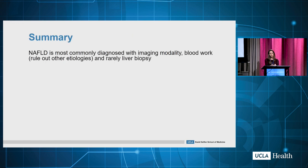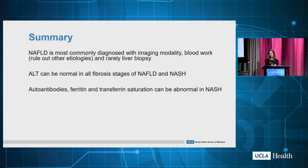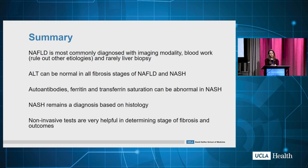In summary, NAFLD is the most commonly diagnosed liver disease, usually identified on imaging or blood work and mostly a diagnosis of exclusion — rarely requiring liver biopsy to make that diagnosis. ALT can be normal in all stages of fibrosis across the spectrum of NAFLD and NASH, and positive autoantibodies, ferritin, and transferrin levels are not uncommonly found. NASH remains a histological diagnosis if you truly want to confirm it. There are many noninvasive tests helpful in ruling out disease, and using a combination can help rule in advanced fibrosis and cirrhosis. Thank you for your attention.